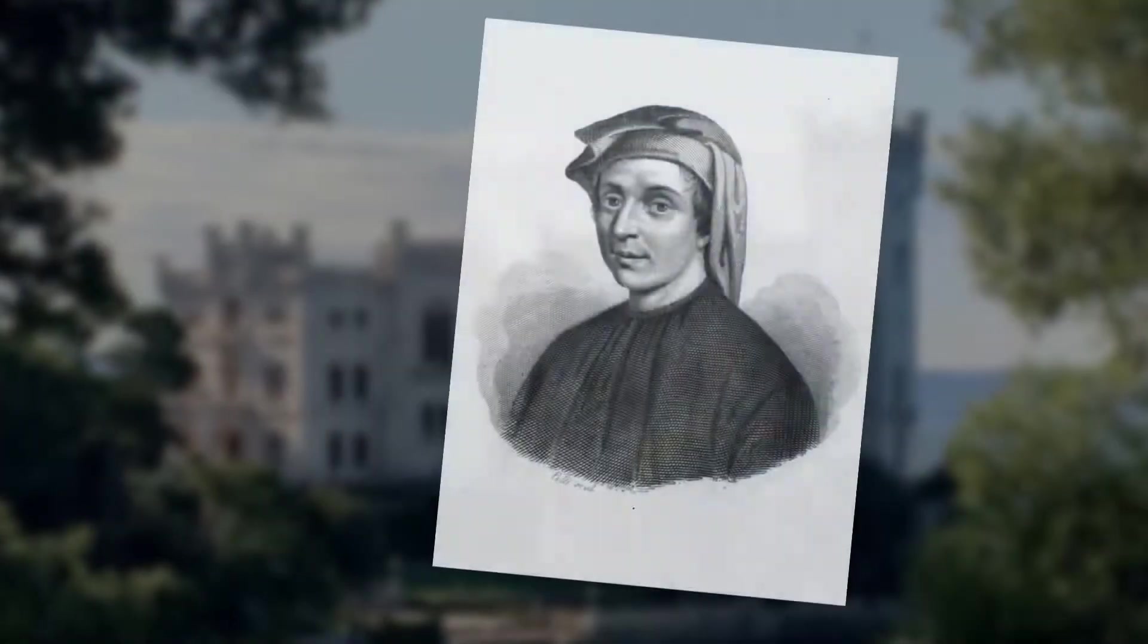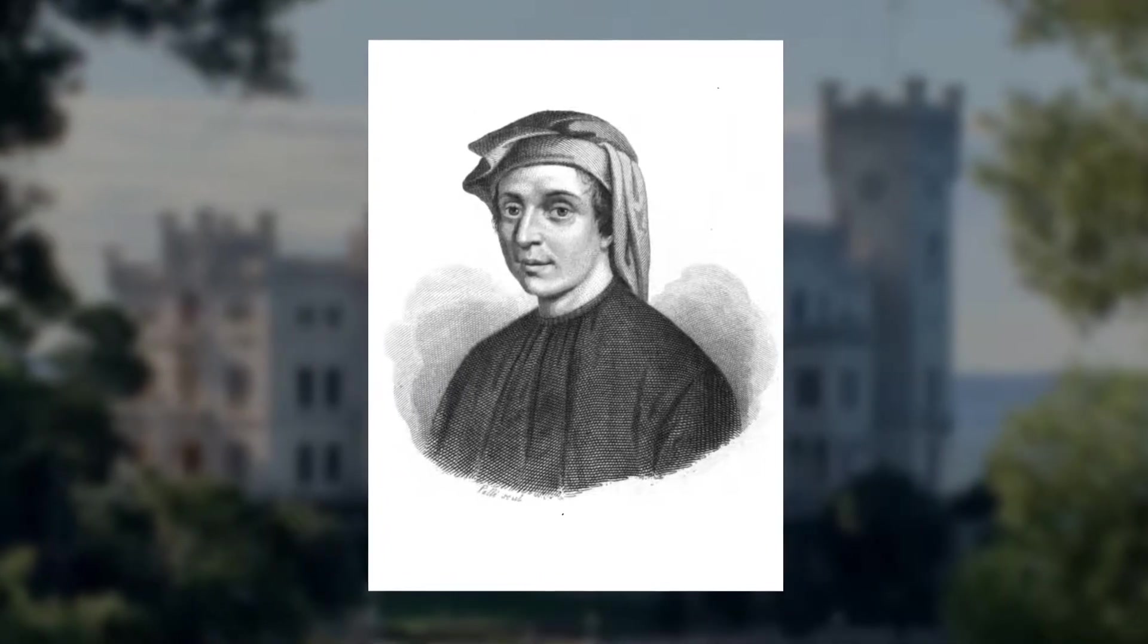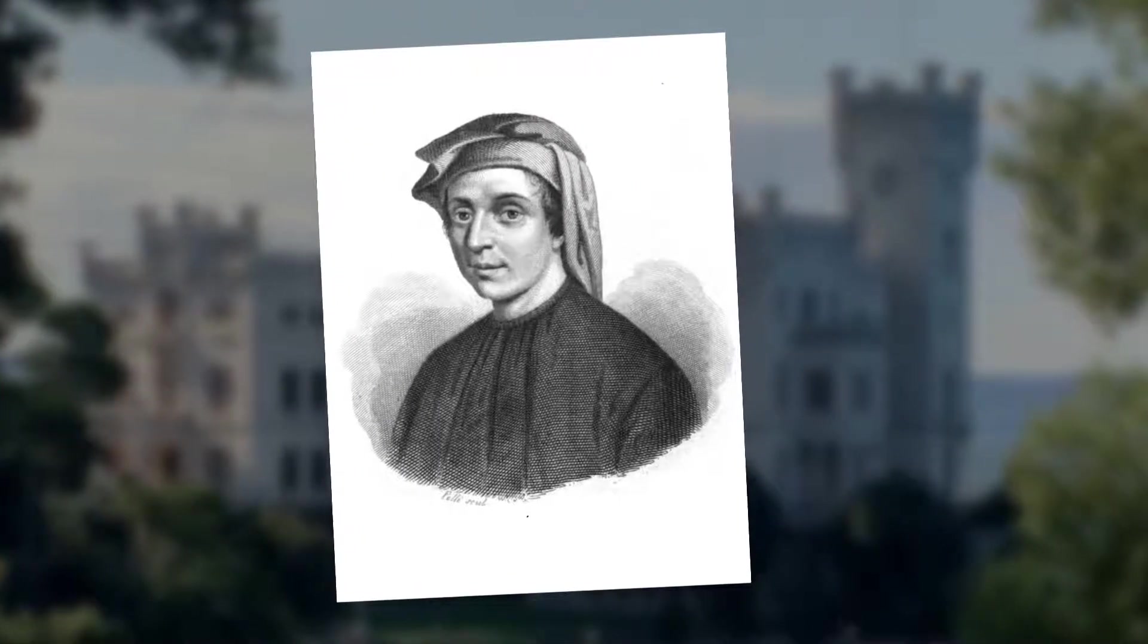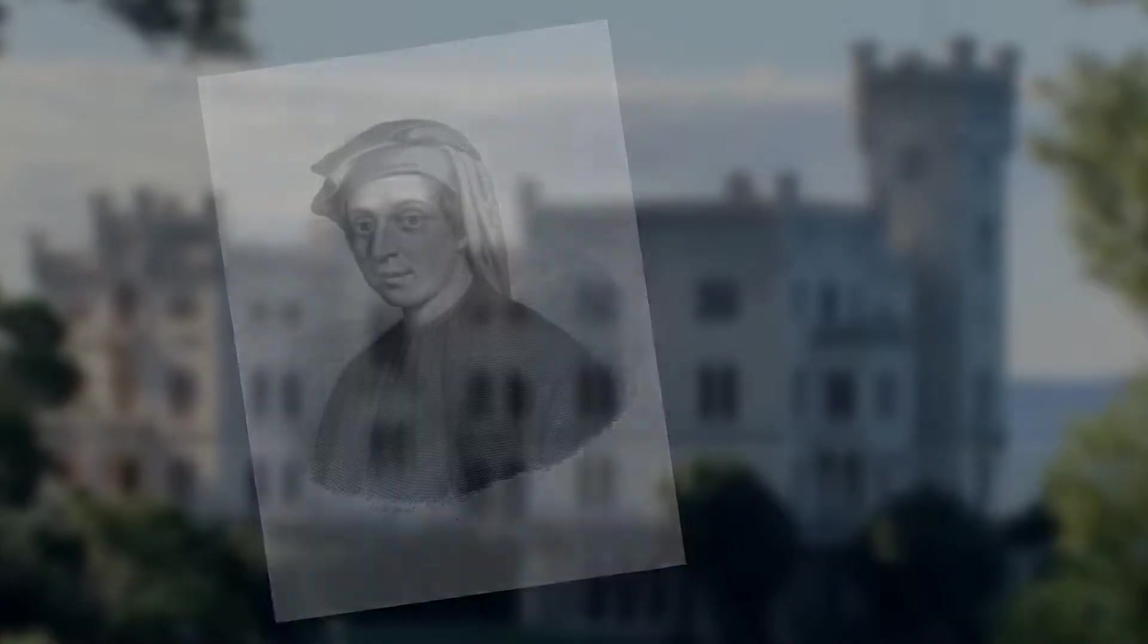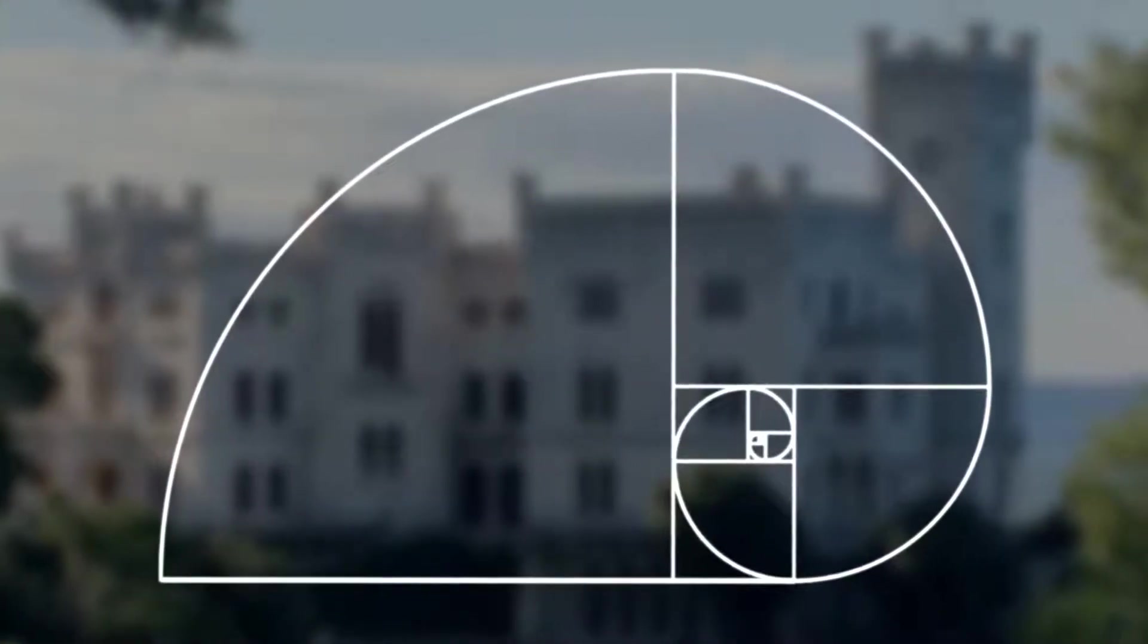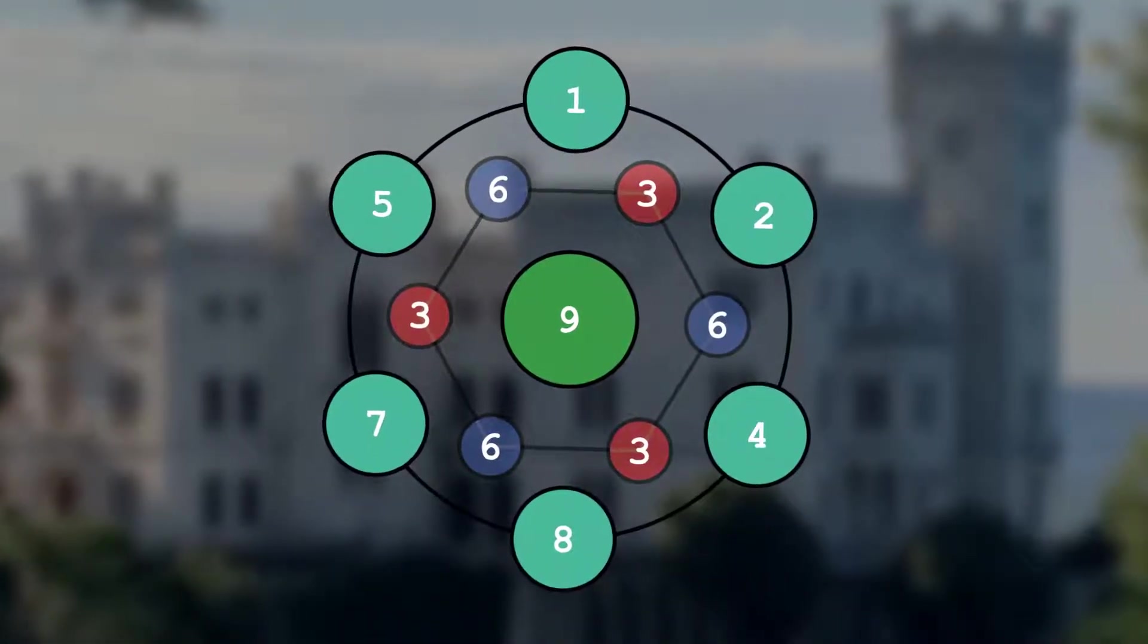Fibonacci also introduced the Arabic numbers to Europe in the 12th century. Fibonacci is actually very important when it comes to our number system, which is interesting given that we have a Fibonacci spiral and vortex math comes out of these numbers that Fibonacci brought over.